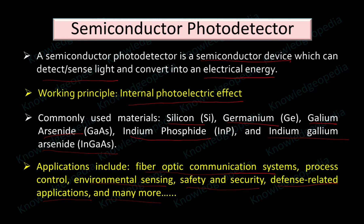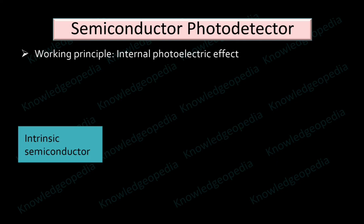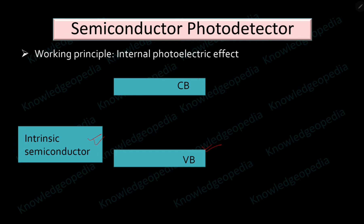Now, the exam question asked about the photo detection mechanism of a semiconductor photo detector, and the working principle is the internal photoelectric effect. Let us look into this in more detail. Consider one intrinsic semiconductor. If we plot its band diagram, there is a valence band, a conduction band, and a gap between them known as the barrier potential or energy gap, denoted as EG.